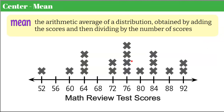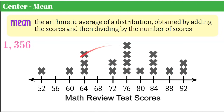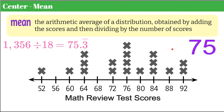You can't find the mean when given only a box plot unless you're also given the data set, so we'll find mean using our dot plot. Mean is the arithmetic average obtained by adding scores and dividing by the number of scores. Adding all values — 52 plus 60 plus 64 three times, 72 twice, and so on — gives a sum of 1,356. Dividing by 18 student scores gives 75.3 repeating, so we round and say the class average was 75.